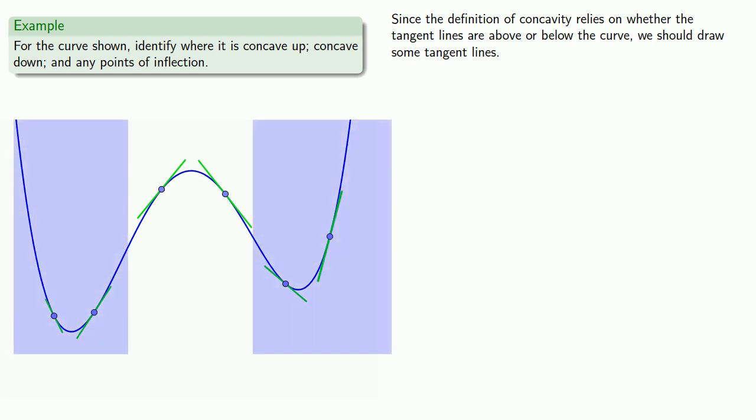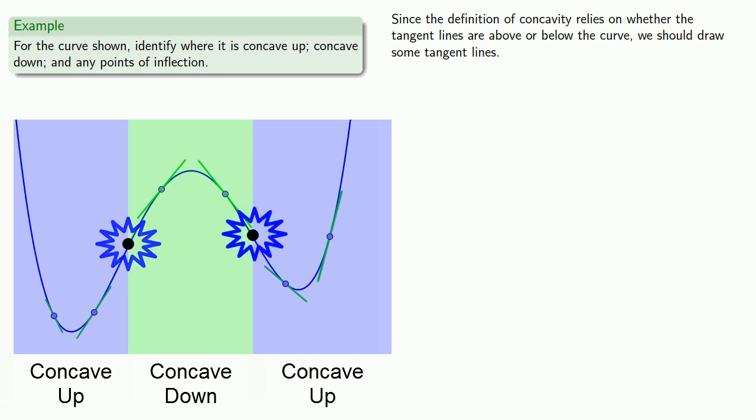So for these regions, the tangent lines are below the curve, and the curve is concave up. In this region, the tangent line is above the curve, and the curve is concave down. And since the concavity changes from up to down and from down to up someplace here in the middle, we have a couple of inflection points.